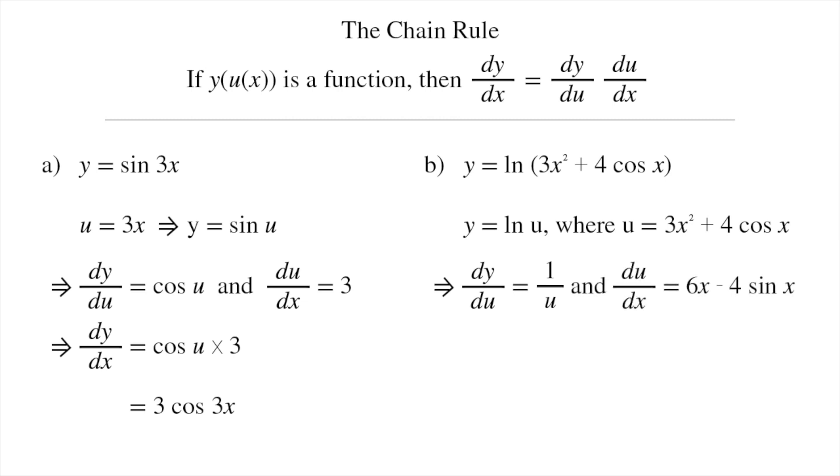So we've taken the complicated function that we couldn't differentiate directly and turned it into functions that we can differentiate. And now we can calculate dy/dx. It's just 1/u times (6x - 4sin(x)).